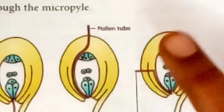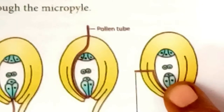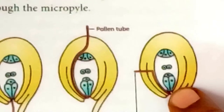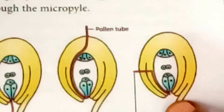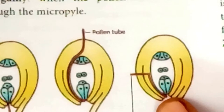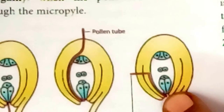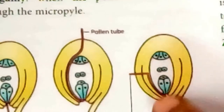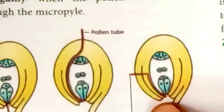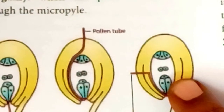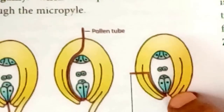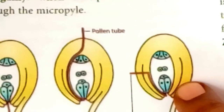After traveling the full length of the style, the pollen tube enters the ovary locule where it is guided towards the micropyle end of the ovule by a structure called the obturator. After reaching the embryo sac, a pore is formed in the pollen tube and its contents — two male nuclei, the vegetative nucleus, and cytoplasm — are discharged into the synergid. The pollen tube stops growing once it enters the synergid, and the tube nucleus disorganizes.